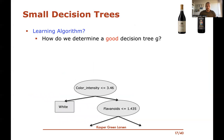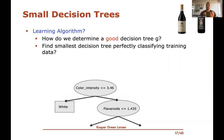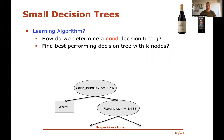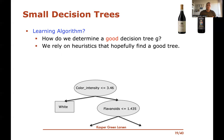Why not search for the smallest decision tree that perfectly classifies the training data? The issue is that this is NP-hard — there's probably no fast algorithm for finding it on large datasets. Similarly, finding the best-performing decision tree with exactly k nodes is also NP-hard, so even fixing a budget on size doesn't make the problem tractable.